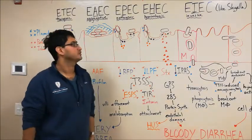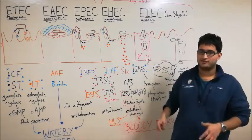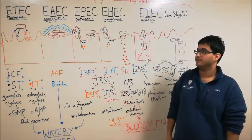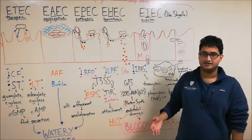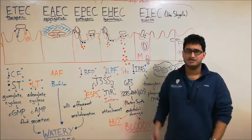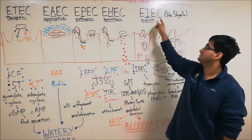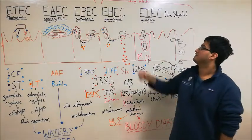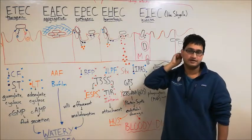So now let's move on to EHEC and start the bloody diarrheas. We just discussed the three major E. coli causes of watery diarrhea: ETEC, EAEC, and EPEC. Now let's talk about the two major E. coli causes of bloody diarrhea: EHEC and EIEC. And just to remind yourself, these are all going to colonize the large intestine as opposed to the small intestine seen in the watery diarrheas.